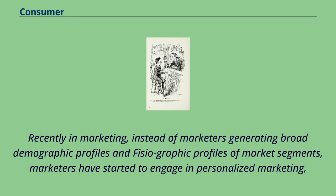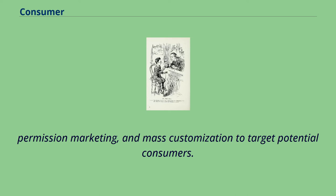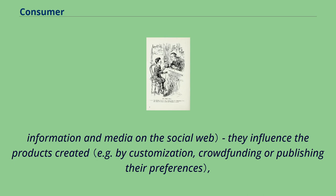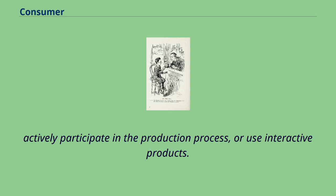Recently in marketing, instead of marketers generating broad demographic profiles and psychographic profiles of market segments, marketers have started to engage in personalized marketing, permission marketing, and mass customization to target potential consumers. Largely due to the rise of the internet, consumers are shifting more and more towards becoming prosumers — consumers who are also producers — often of information and media on the social web. They influence the products created, actively participate in the production process, or use interactive products.